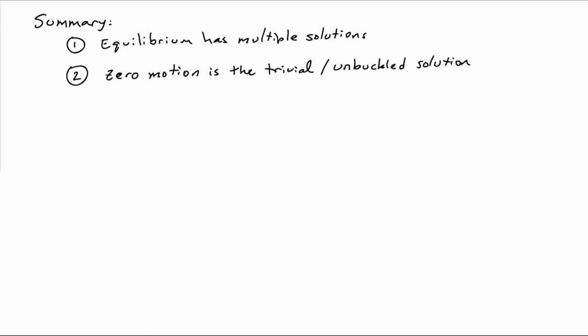The trivial solution is the case where you have zero motion, so there's no buckling types of motion of the system. That's just a bit of terminology there. That's usually the safe condition for the mechanical system.